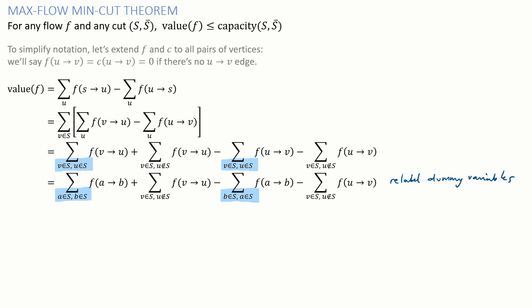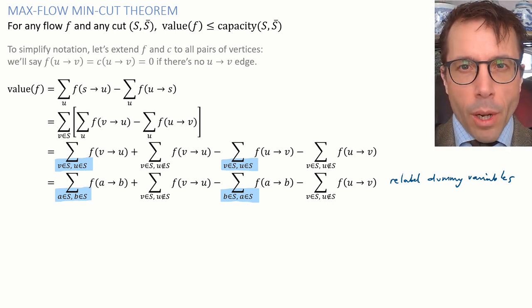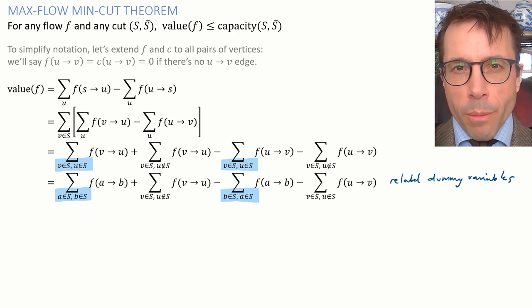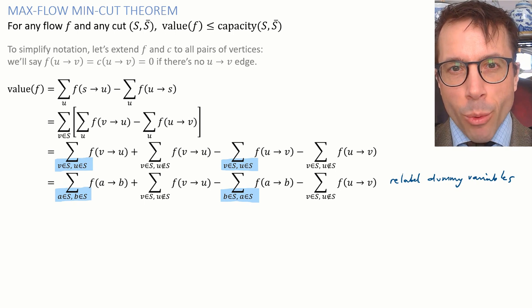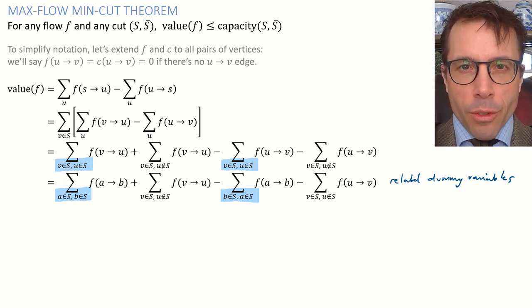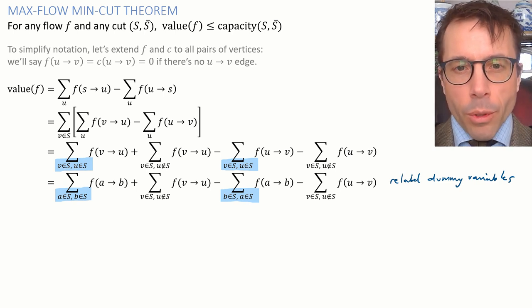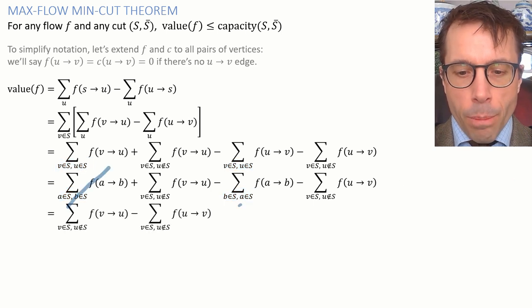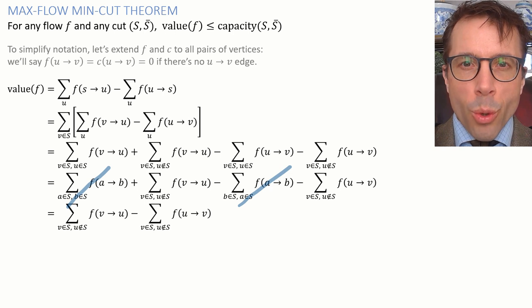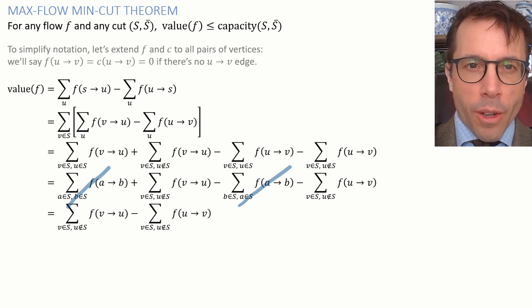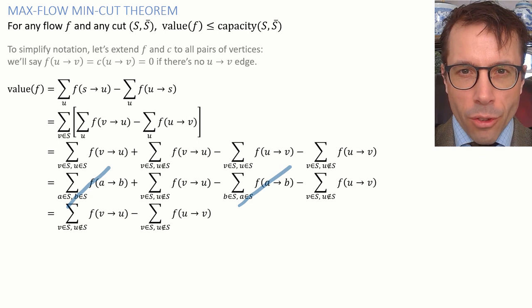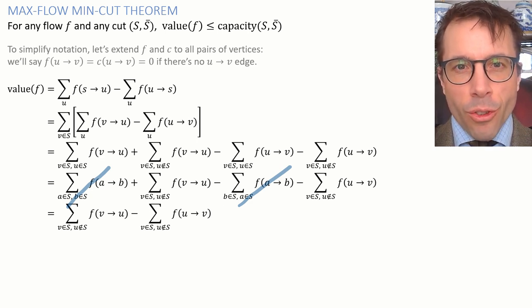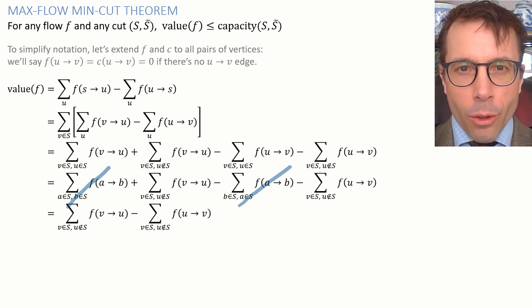Next step is where we get to cancel out all the internal flows. What I've done here is I've relabeled the terms in two of the sums. The sum variable is just a dummy variable. It doesn't matter what we call it. It's like a for loop. If I write for i in range of 10 and you write for j in range of 10, then our code is just the same. We've simply used different letters for our dummy variables. It's exactly the same here. It doesn't matter what I call the variables that I'm summing over. And the point of this relabeling is to make it clear that two of the terms in my sum are exactly the same. A sum over a and b in S of the flow a to b. And so therefore these two sums cancel each other out. This is exactly the sort of canceling we did in our simple sketch on the last slide, but we found a way to write out the flow conservation equations so that they work no matter how complicated the graph is inside S.